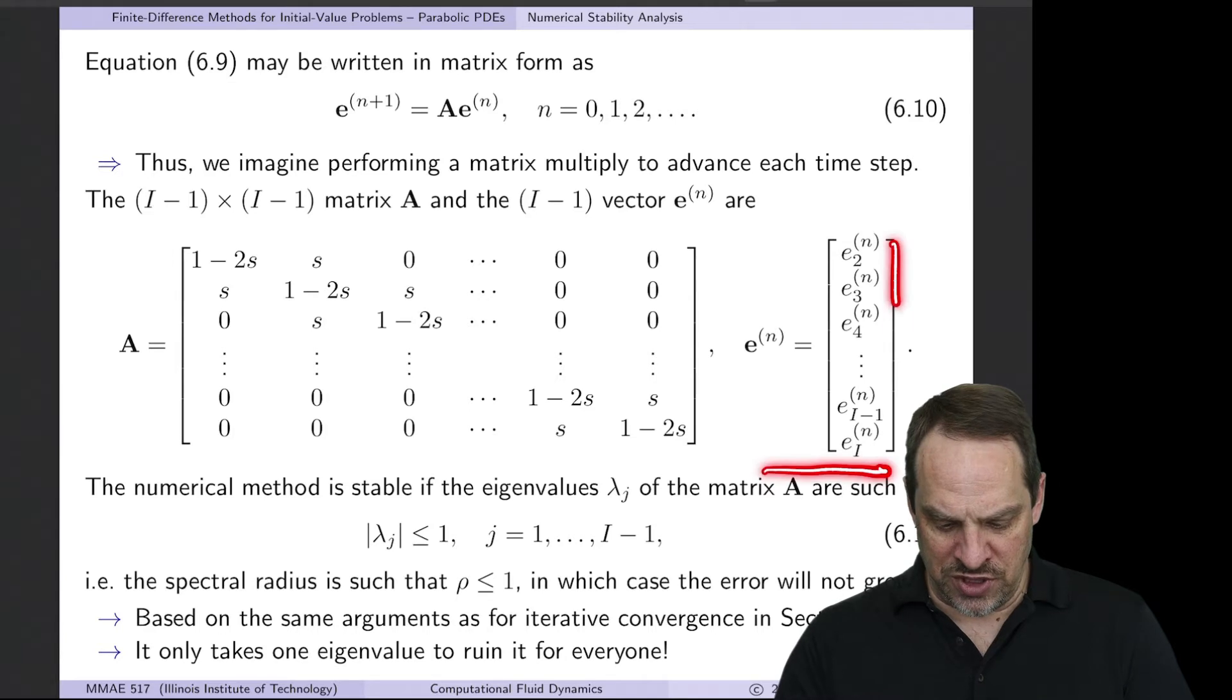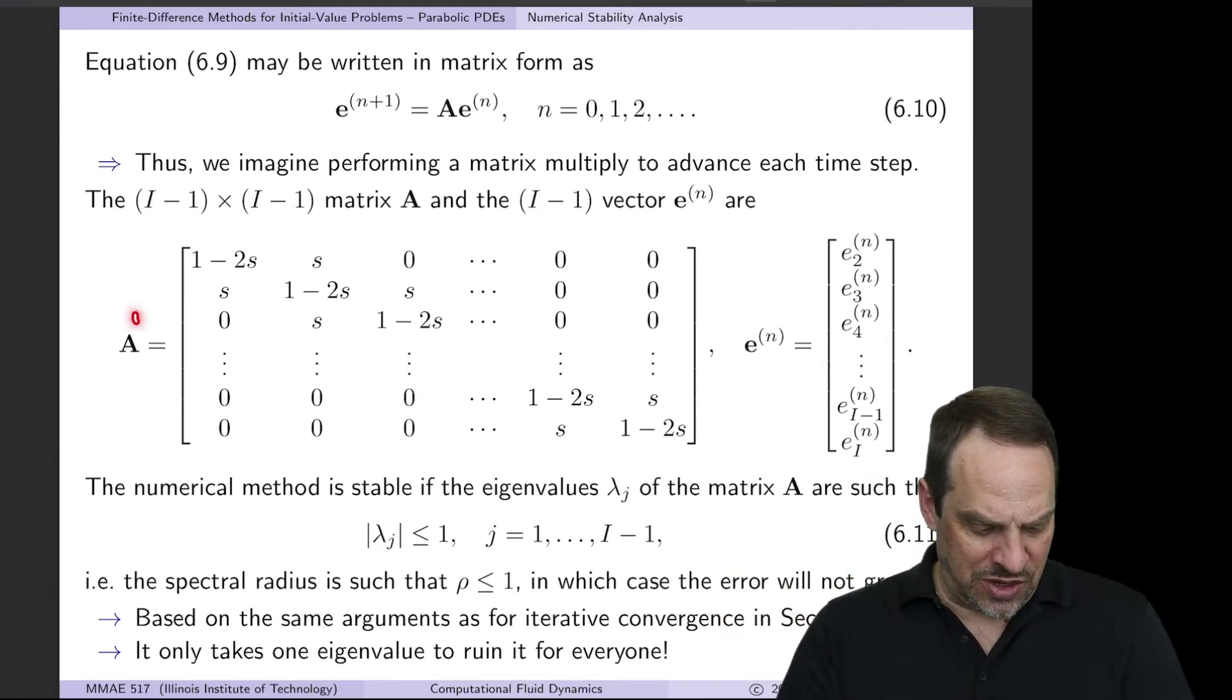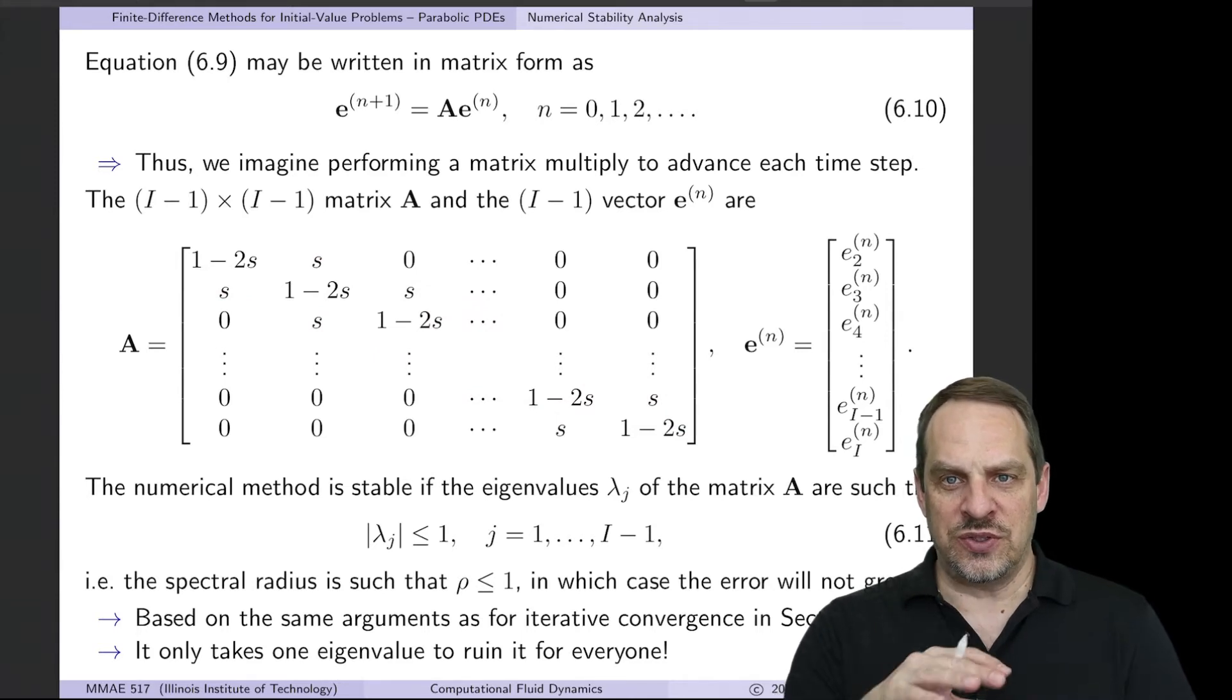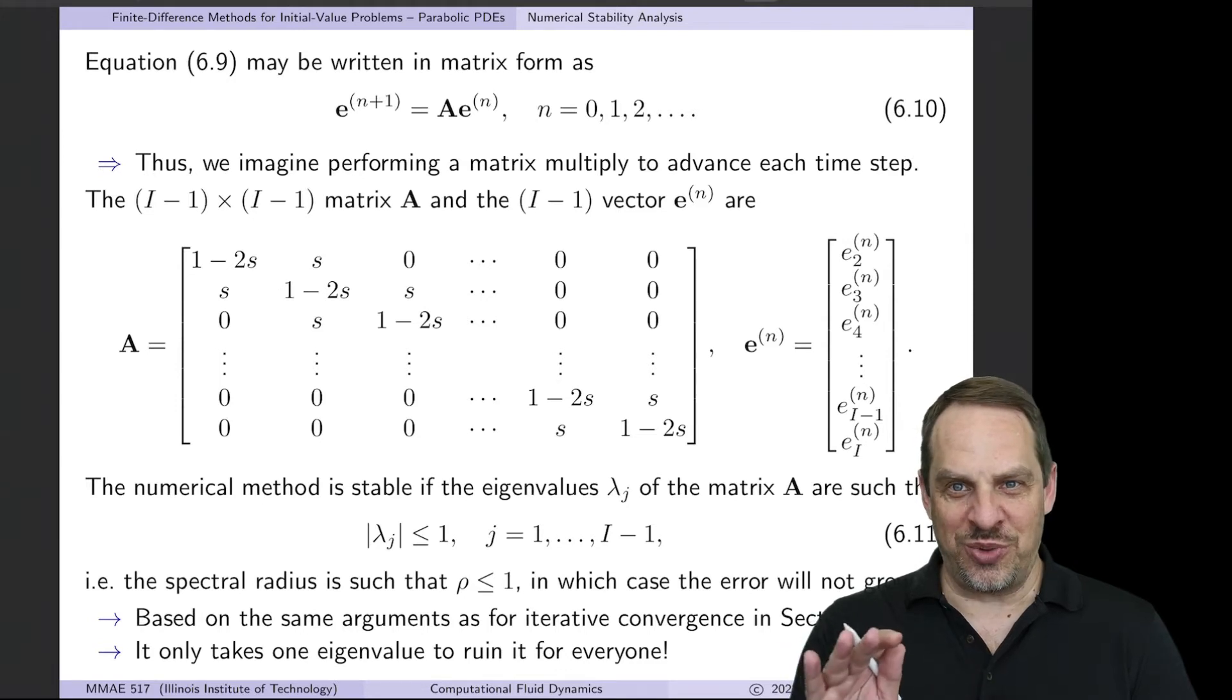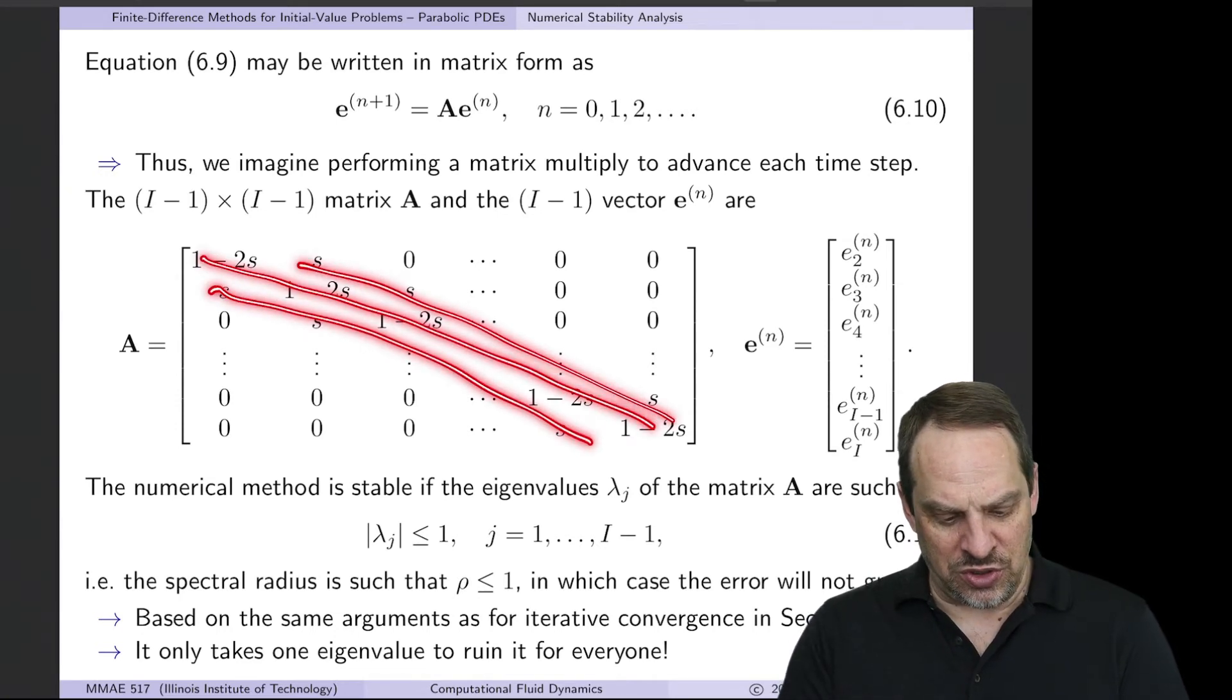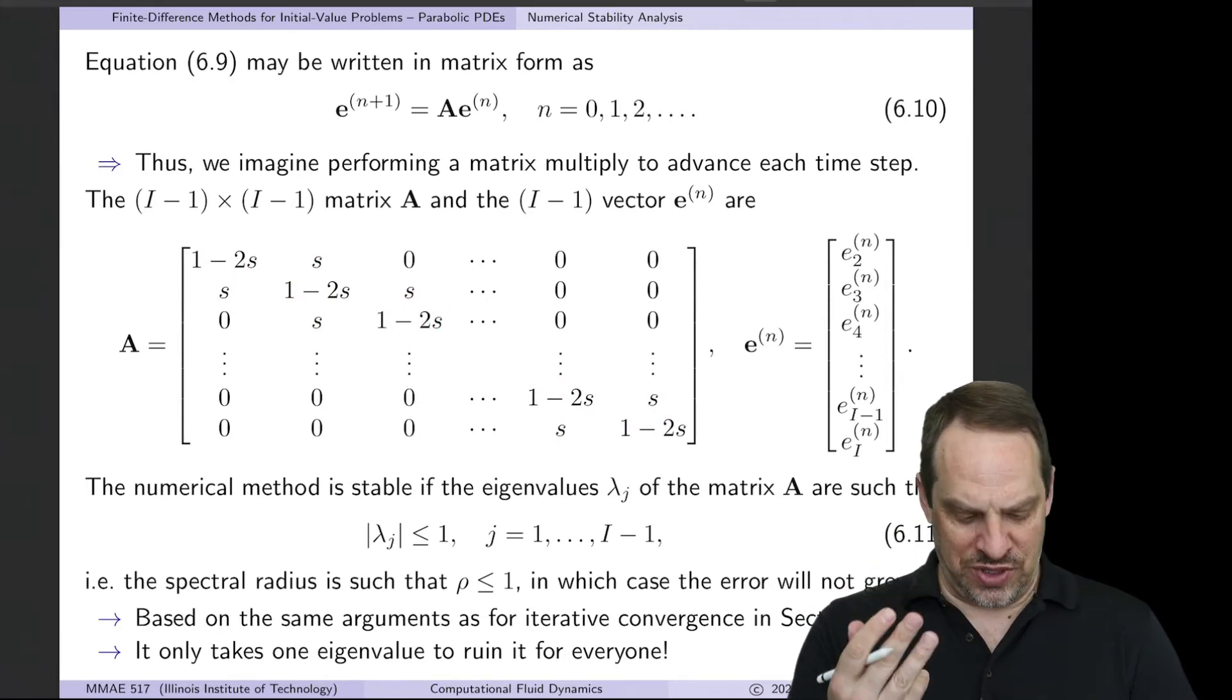So e then is just all of the unknown e's. It's the e's in the interior 2 through capital I, because at 1 and capital I plus 1, we know the values from the Dirichlet boundary conditions. Now A, we have the 1 minus 2s down the main diagonal, and then we have s and s on the upper and lower diagonals. This is specific to this particular situation. The first order explicit method applied to the 1D unsteady diffusion equation. You change anything about what I just said, and you change the matrix A. But in this case, you'll notice that this is a Toeplitz matrix, because it has the same values along the diagonal, and it's tridiagonal. We only have the three diagonals which have non-zero values. Everything else is zero.